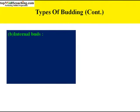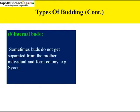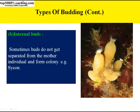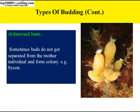The second type is internal buds or endogenous budding — also called gemmules. Sometimes buds do not get separated from the mother individual and form a colony, as in Sycon. In internal budding, the new individuals remain joined to the parent to form a colony. This happens in Sycon, Obelia, Spongilla, etc. The individuals present in a colony are called zooids. Internal buds or gemmules occur in most freshwater sponges, helping in dispersal as well as perennation.